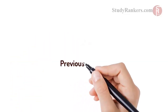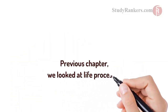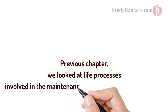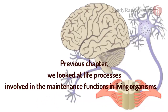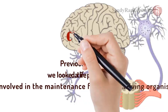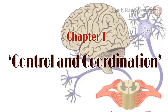Hi, in the previous chapter, we looked at life processes involved in the maintenance function in living organisms. In this video, we are going to understand the seventh chapter, that is control and coordination, which is divided into three parts. In this video, we are going to understand the first part.